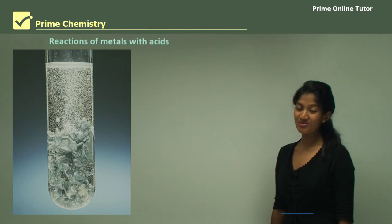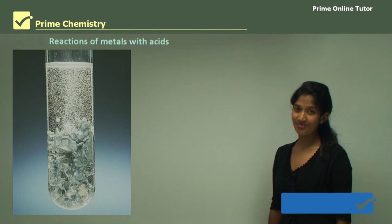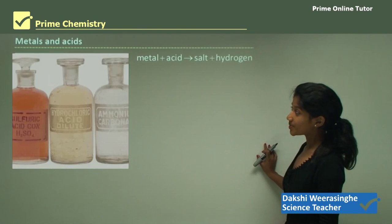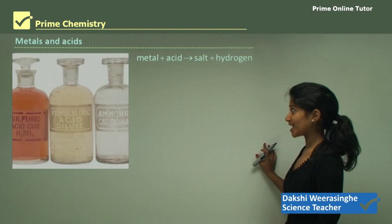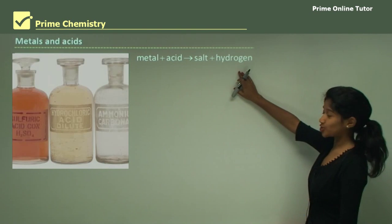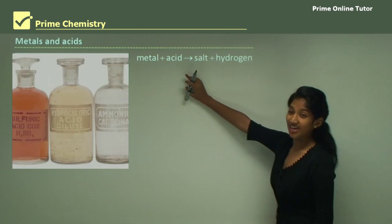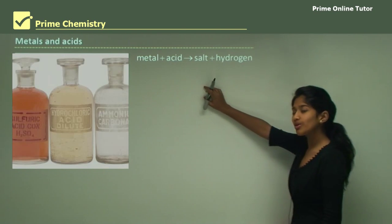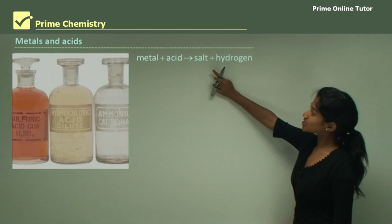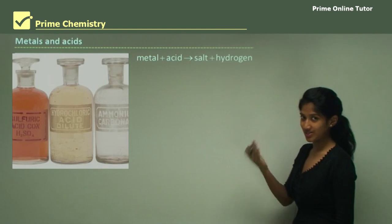Hello everyone. Today we will be learning about the reactions of metals with acids. We have metals and acids reacting to form a salt and hydrogen gas. Any metal reacting with an acid would always form a salt and hydrogen gas. The salt will be dependent on the acid and the metal you'll be using.